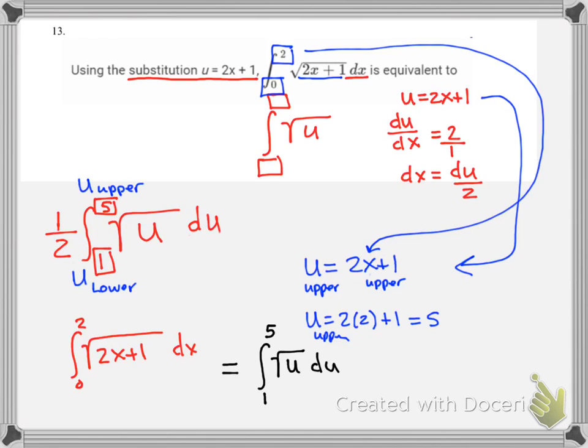The antiderivative of u to the 1 half would be u to the 3 halves, because we're going to add 1 to the 1 half power that's really there, times 2 thirds. And we would evaluate this from 1 to 5.